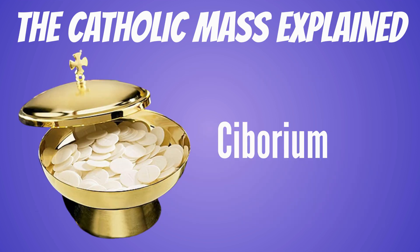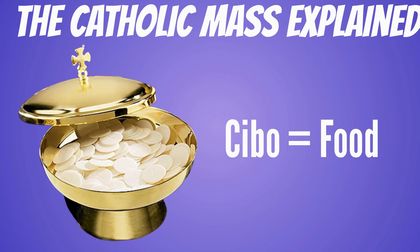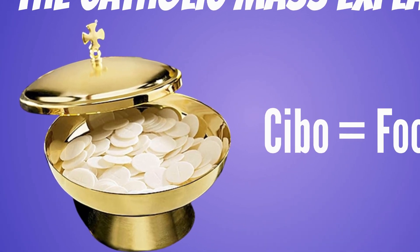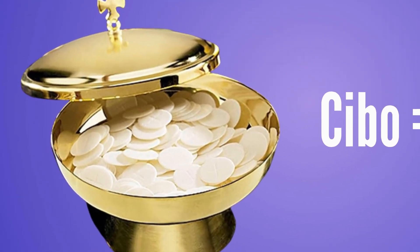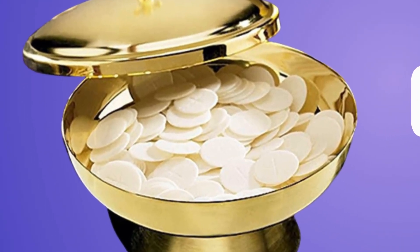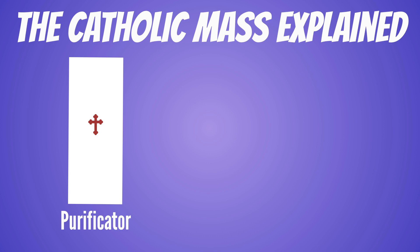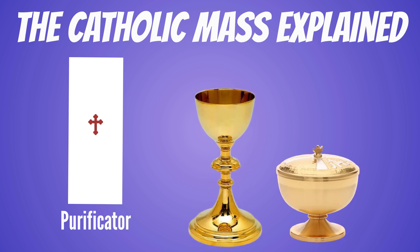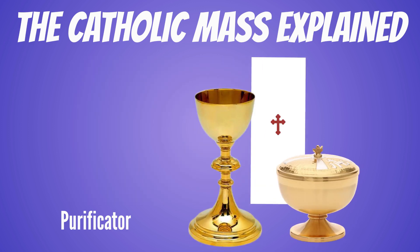The ciborium comes from the Latin root word cibo, which means food, because we have the communion host which will turn into the body of Christ. The paten is also known as the ciborium, containing the smaller hosts for communion. The purificator is a white linen cloth which is used to wipe the chalice and paten following communion.